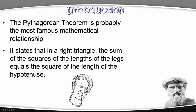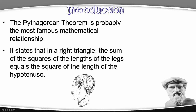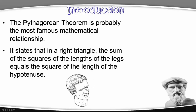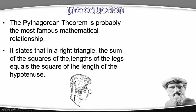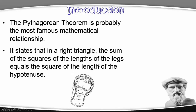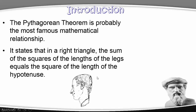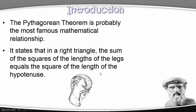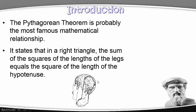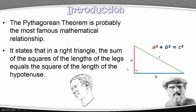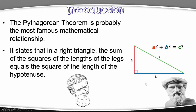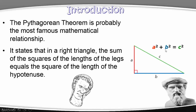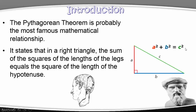Most of you may have heard of the Pythagorean Theorem. It is probably one of the most famous relationships in all of mathematics. It states that in a right triangle, the sum of the squares of the length of the legs equals the square of the length of the hypotenuse. A and B are called the two legs, and C is the hypotenuse.